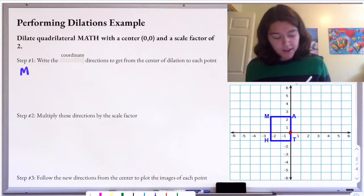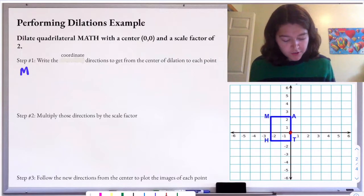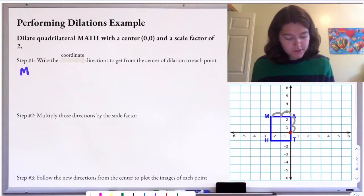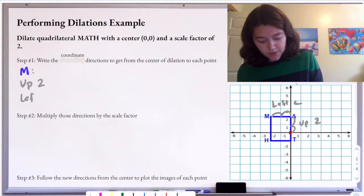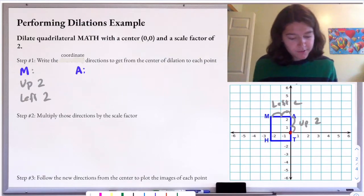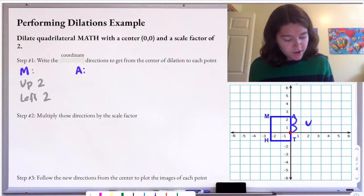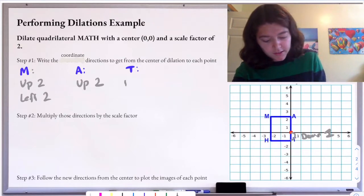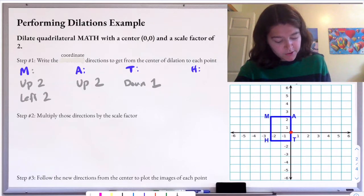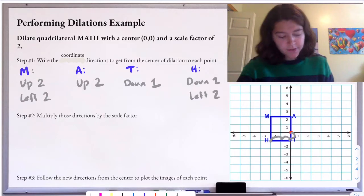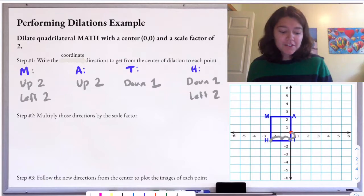We'll start with M. To get from the origin to M, I would go up two units and then left two units. So for M, it's up two, left two. Then we'll do the same thing for A — to get to A, I just need to go up two. To get to T, starting at the origin, I just have to go down one. And for H, starting at the origin, I need to go down one and then left two. Those are the coordinate directions to get from the center of dilation to each point.